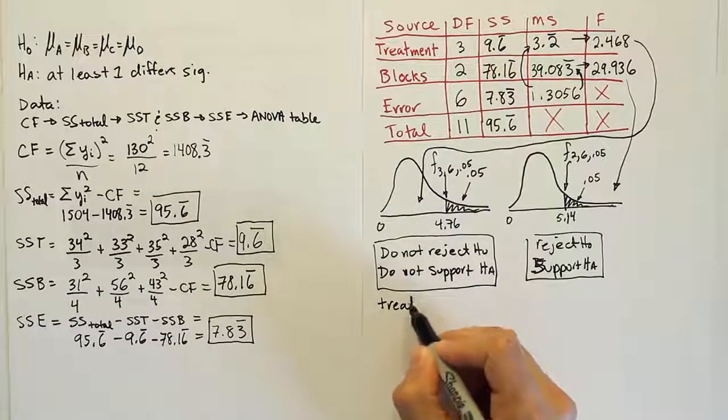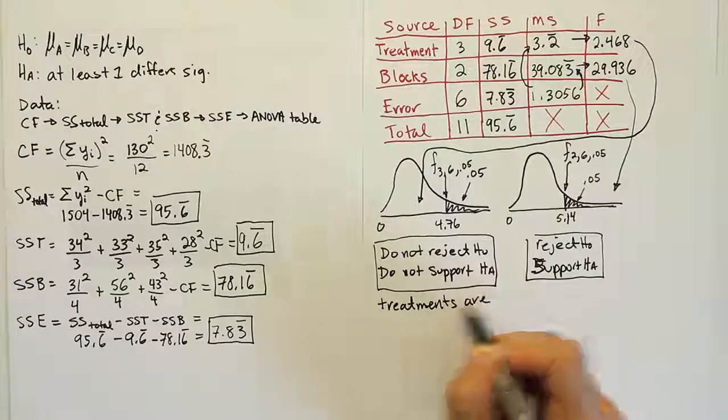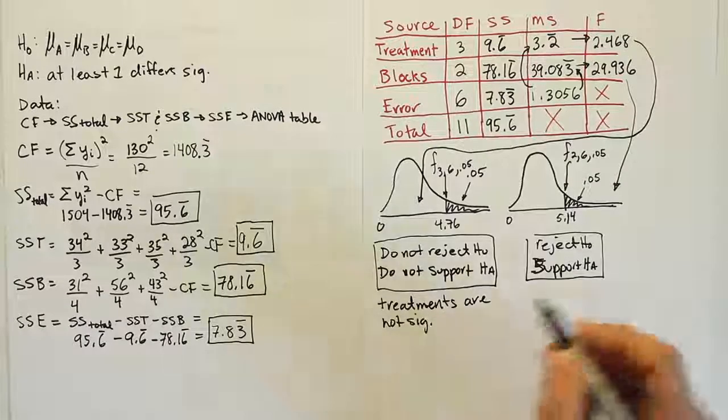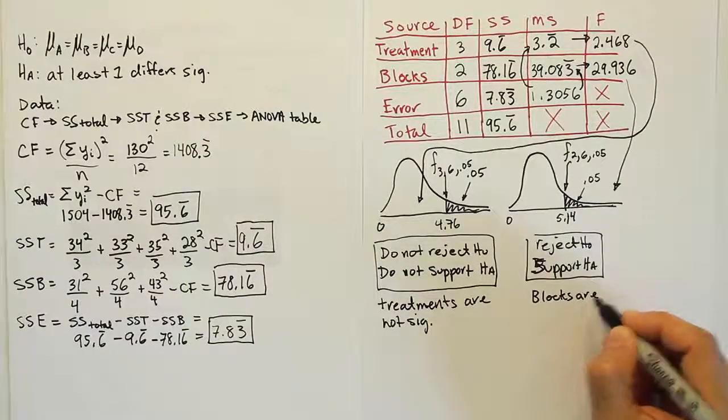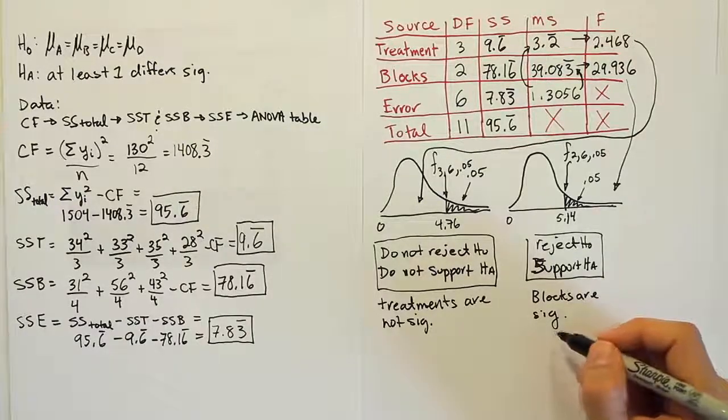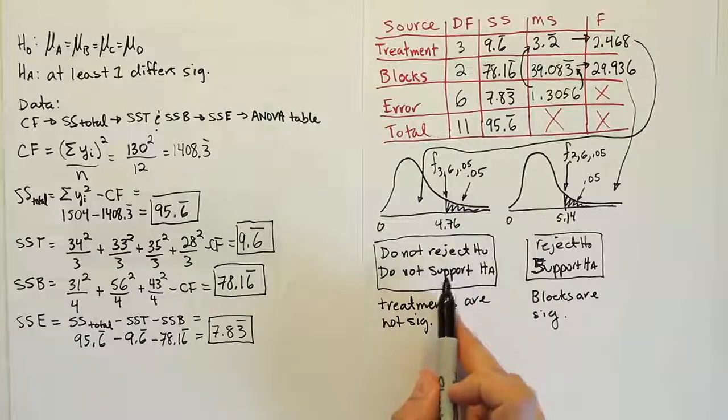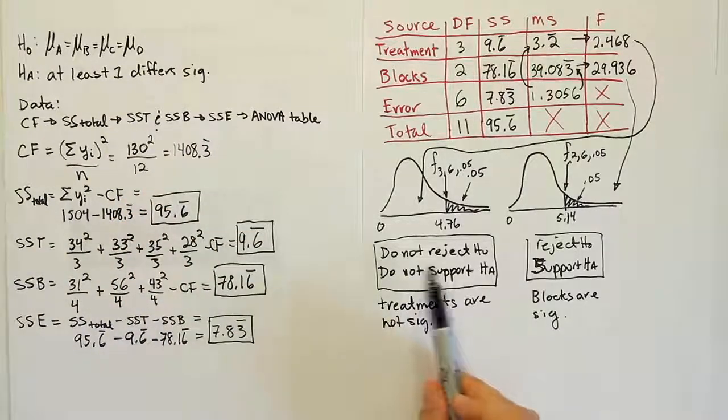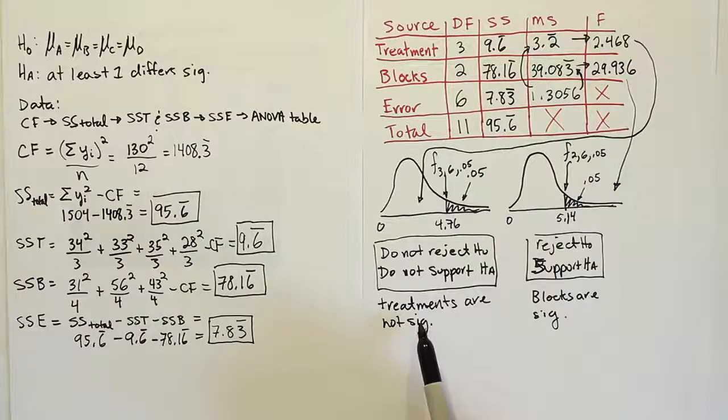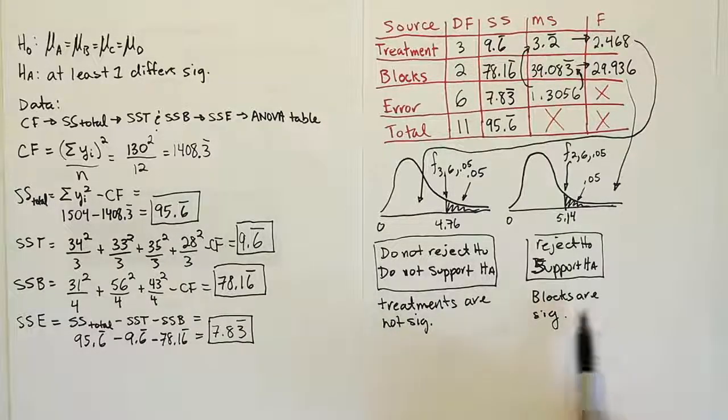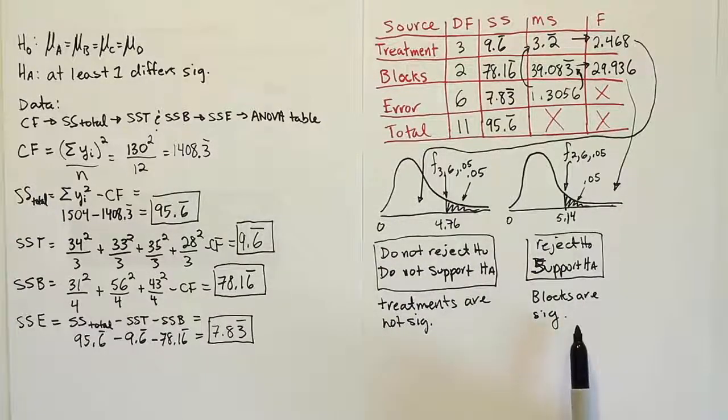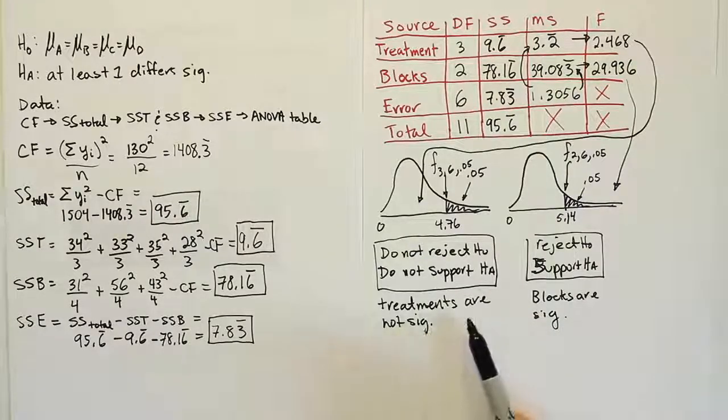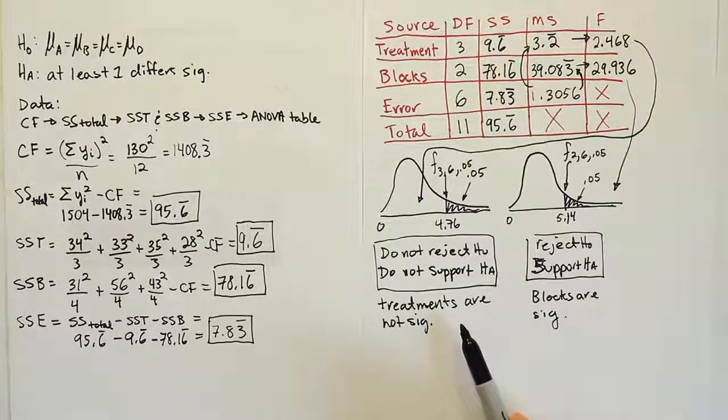So, just remember that shorthand there. The treatments are not significant. Blocks are significant. So, what we've just shown here is that, and this happens in ANOVA testing, we always know that if we don't reject, we're saying the treatments are not significant, meaning that they don't seem to have a significant effect on the yield. And, in this case, the blocks were significant because we did reject. So, we say then, in that case, that the watering scheme or the blocks do seem to matter on the production of plant matter.